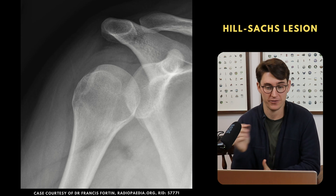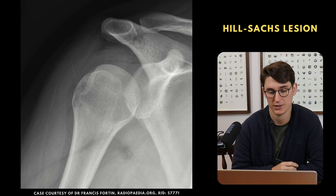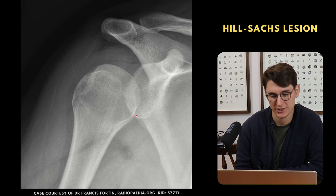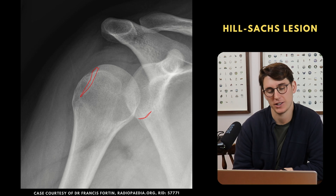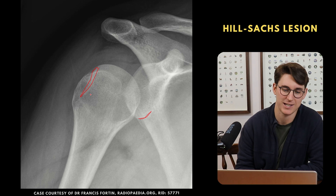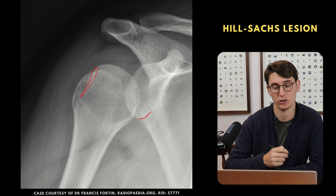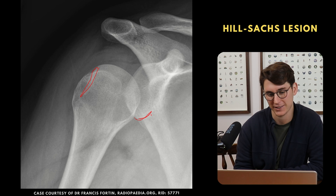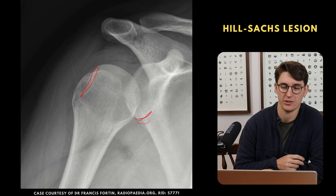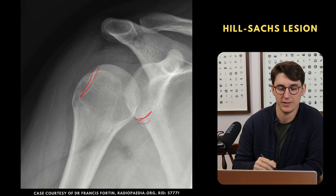Here we have a very similar case. The humerus has dislocated anteriorly, and the impact between the humeral head and the anterior inferior rim has caused a depression fracture on the head of the humerus — this is known as a Hill-Sachs lesion. Sometimes the shoulder will still be dislocated and you can see the head of the humerus impacted against the anterior inferior rim, causing this depression fracture Hill-Sachs lesion in the head of the humerus.